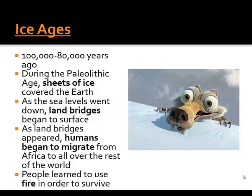During the Paleolithic age, sheets of ice covered some parts of the earth. As the earth became warmer and the ice melted, sea levels went down, which revealed land bridges that surfaced. The animals started to move across these land bridges, and the people hunting them followed the food source. Human beings began to migrate from Africa all over the rest of the world. They also began to use fire in order to survive — to ward off animals, to use as a light source, to cook food — and it became a huge integral part of human existence.